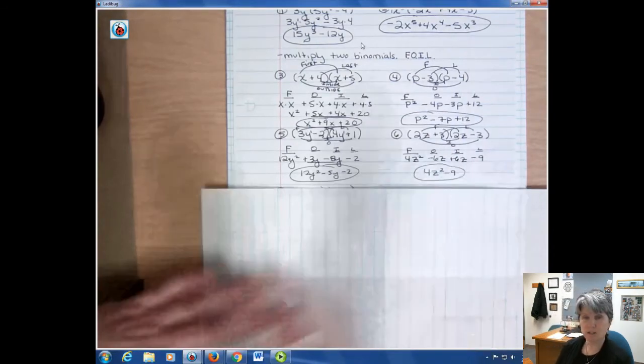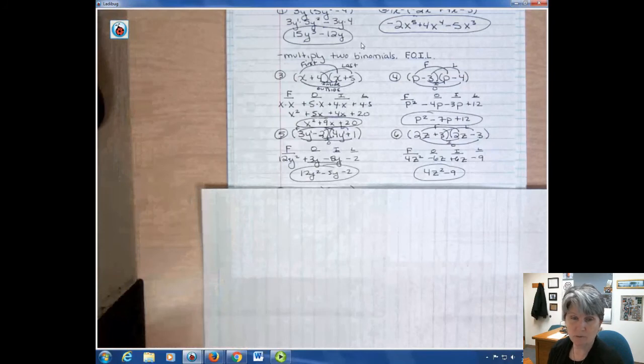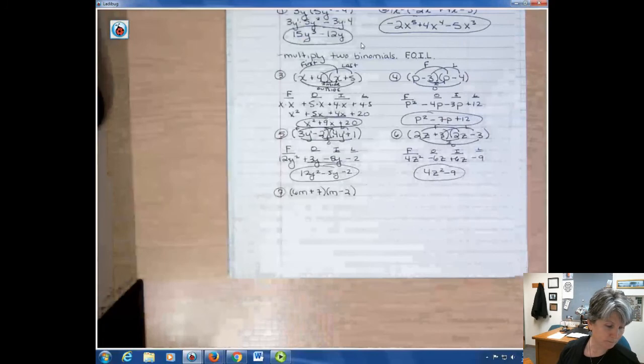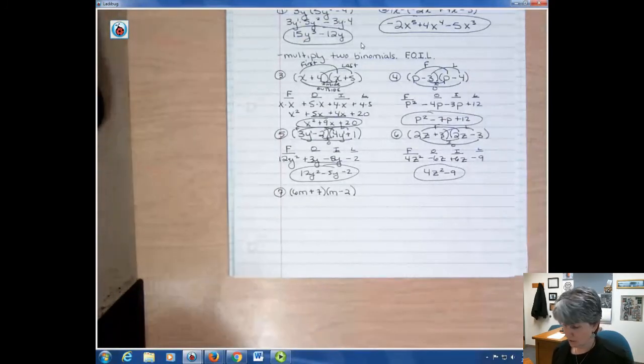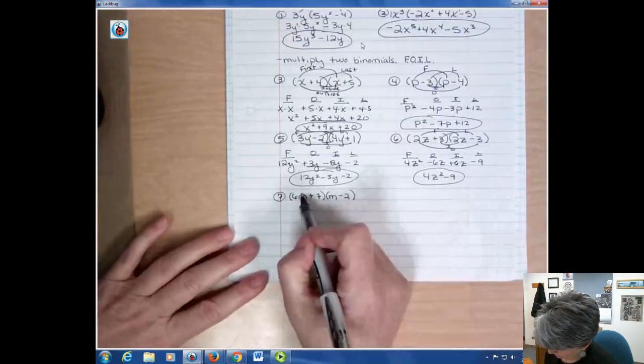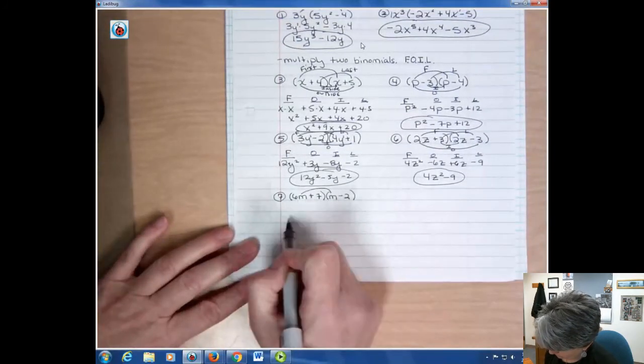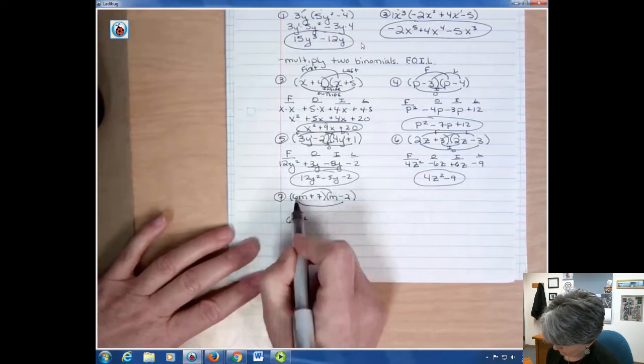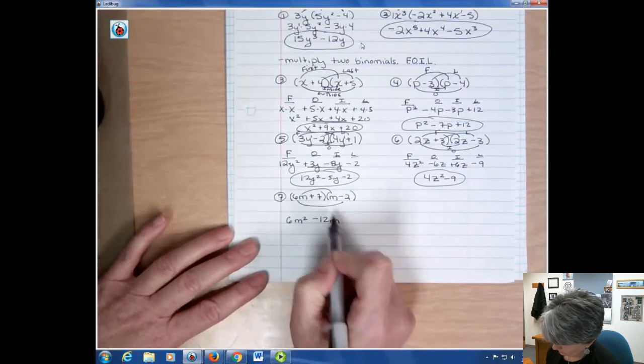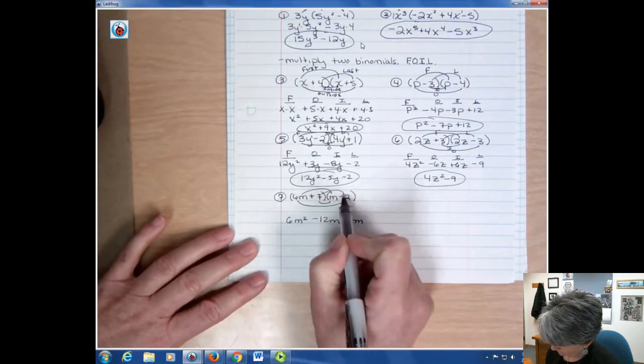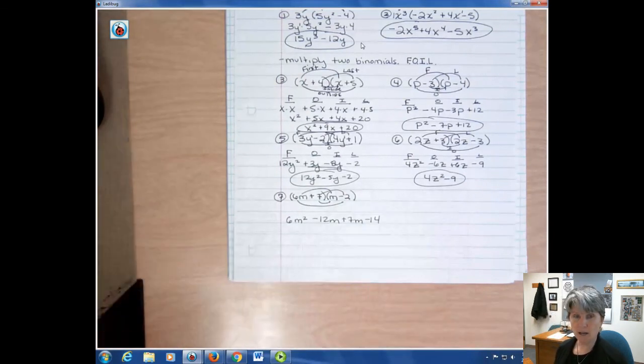This is a special product that we'll see in the next video, but it happens sometimes that your terms could cancel out altogether. And finally, number 7. You can try that one on your own. You should have examples to follow at this point. We're going to do first, 6m times m is 6m squared. Outside, 6m times negative 2. Inside, 7 times m. And last, minus 14. And you can write the FOIL like I did in the first four examples if that's helpful. Or maybe you don't need it.